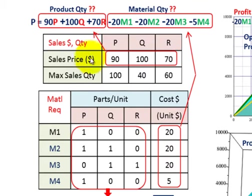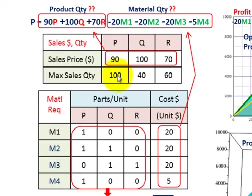We're also going to have maximum sales quantities for each of those items. Those are going to be key when we look at our optimization problem — to see if we've exceeded our maximum sales quantity with our optimization results.